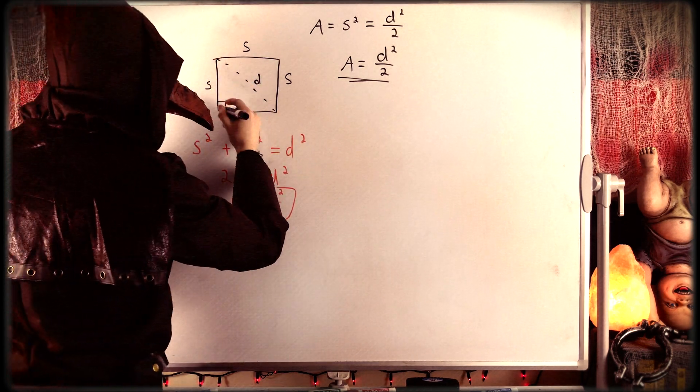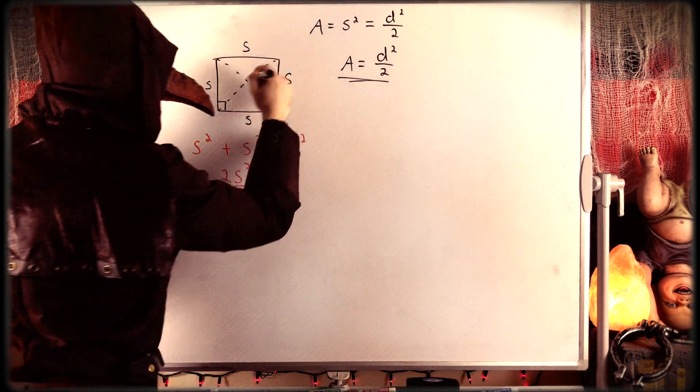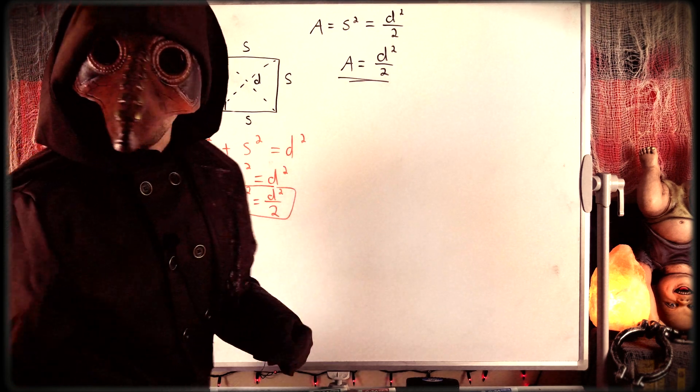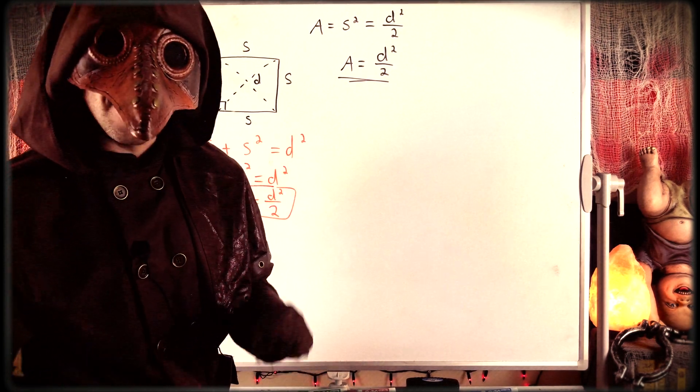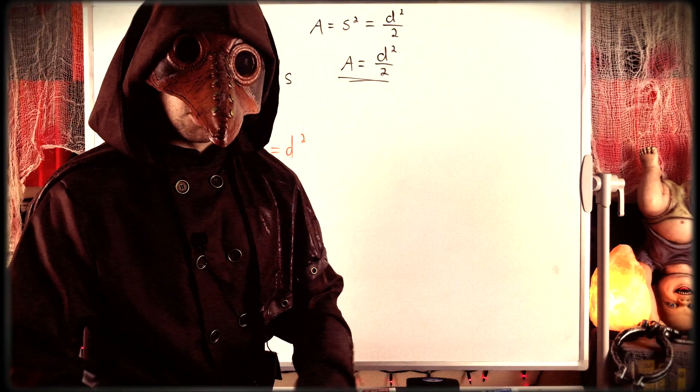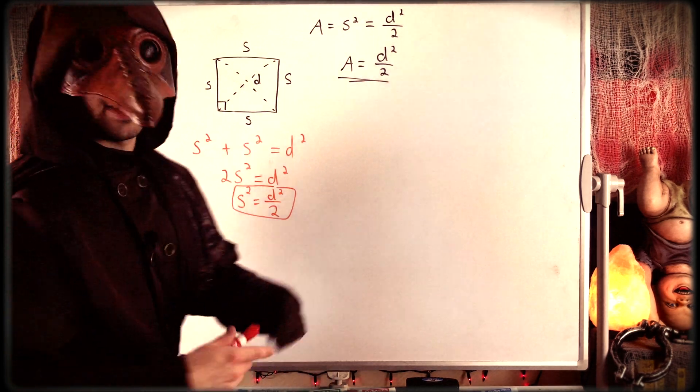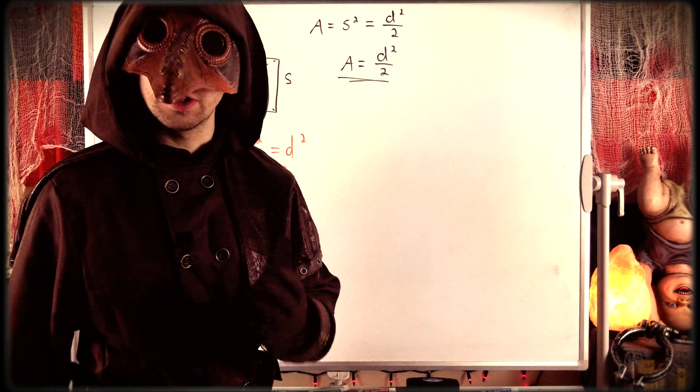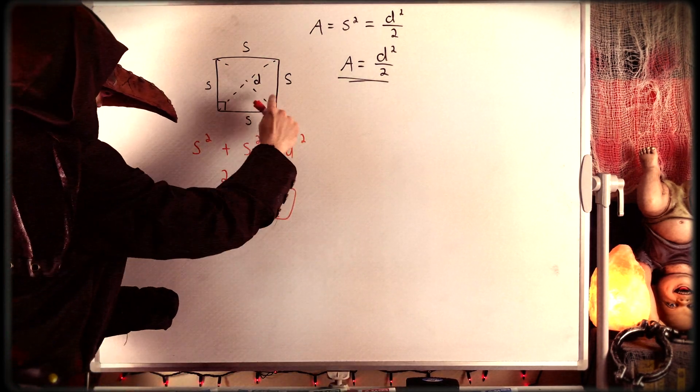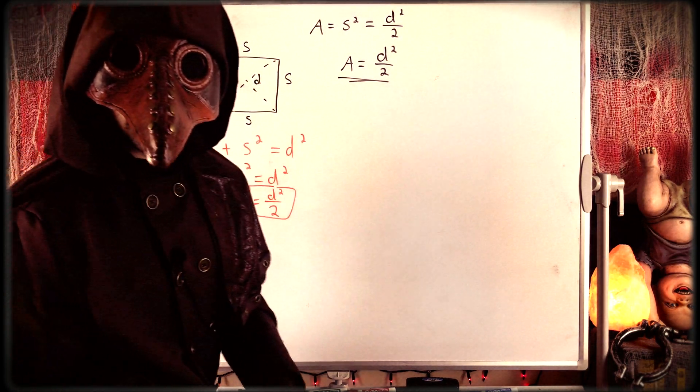And of course, this diagonal is the same as that diagonal, so it doesn't matter which diagonal you know, they both have the same length. And you could show that easily using the side-angle-side triangle congruence postulate. You could show that both of these diagonals have the same length.